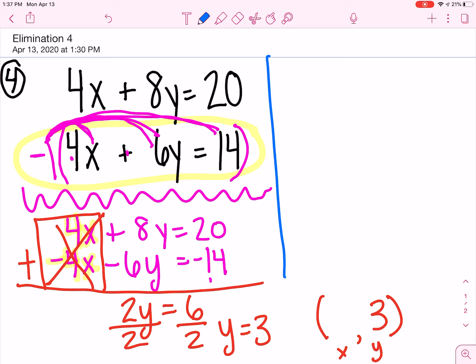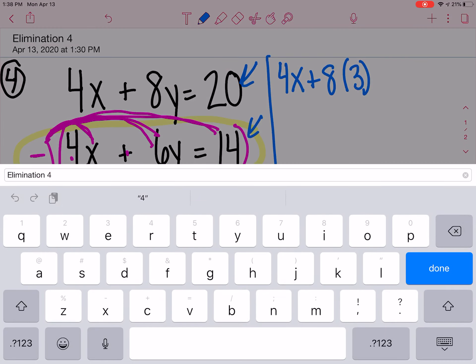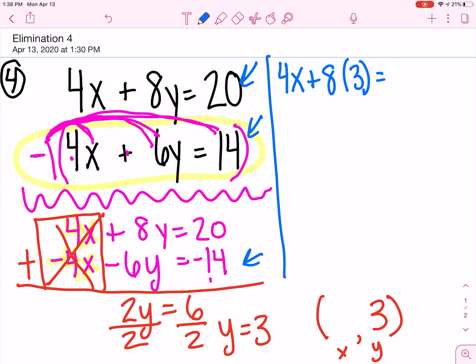Now, let's switch to blue so we can find our x. Again, it doesn't matter. You could use this equation, this equation, or your changed equation. I think I'm going to use the top one. So, I have 4x plus 8 times 3 because that's my y. Then, excuse me, equals 20.